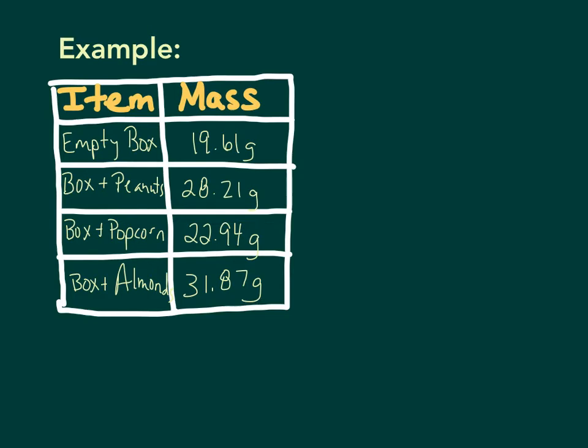The first thing I want to do is find out what is just the mass of the peanuts. And by the way, we're assuming that they all have the same number of peanuts, popcorn, and almonds, just like we would with those gases in Avogadro's hypothesis. So we have to find the mass of the peanuts, the popcorn, and the almonds, and then compare those same numbers, the masses, with each other.